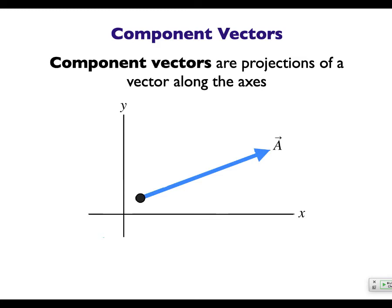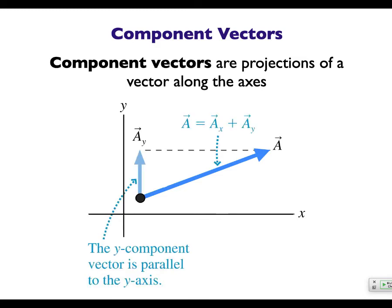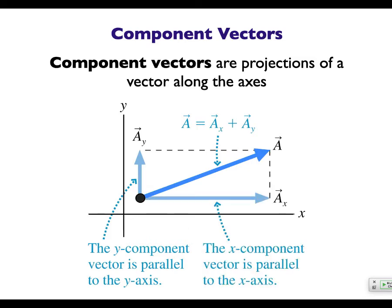Component vectors are the projections along the x and y axes. So if we want to break a vector down into an x-component and a y-component, this would be your y-component — it's parallel to the y-axis — and this is your x-component — it's parallel to the x-axis. If you add up the two components, you get the original vector, so ax plus ay gives you A. You can break it down into x and y and then put it back together — you don't lose anything.